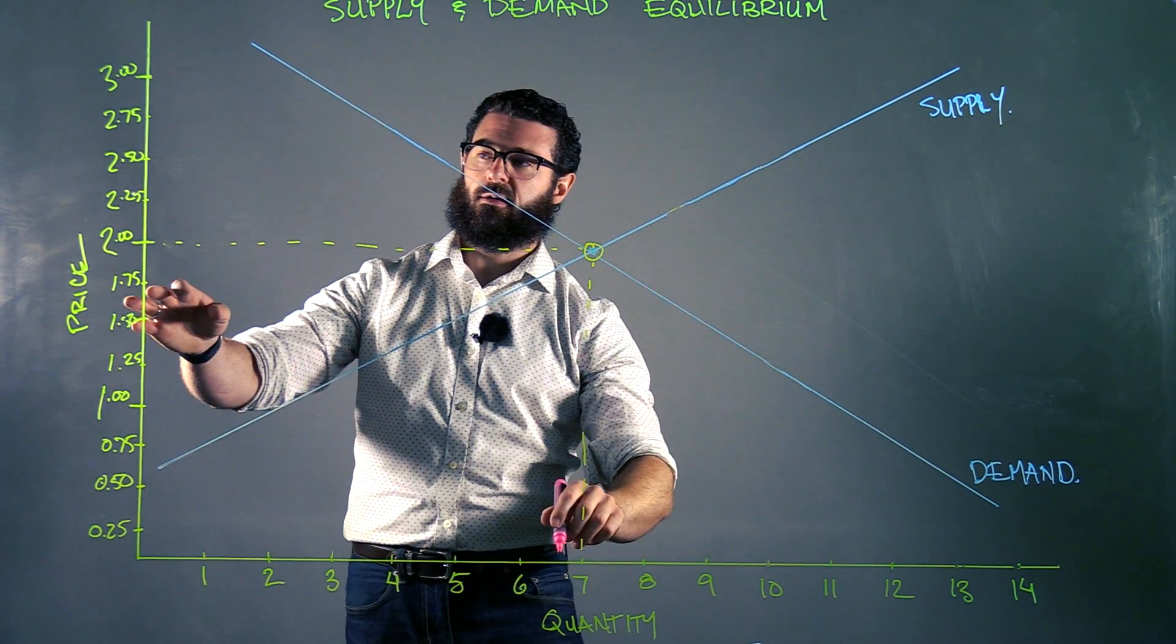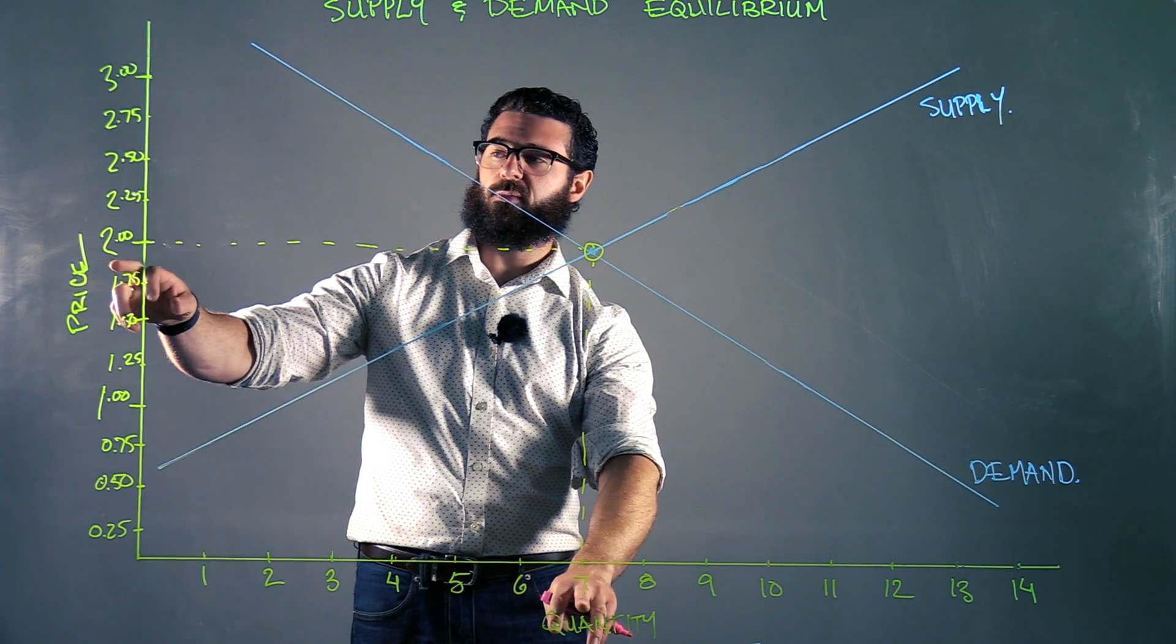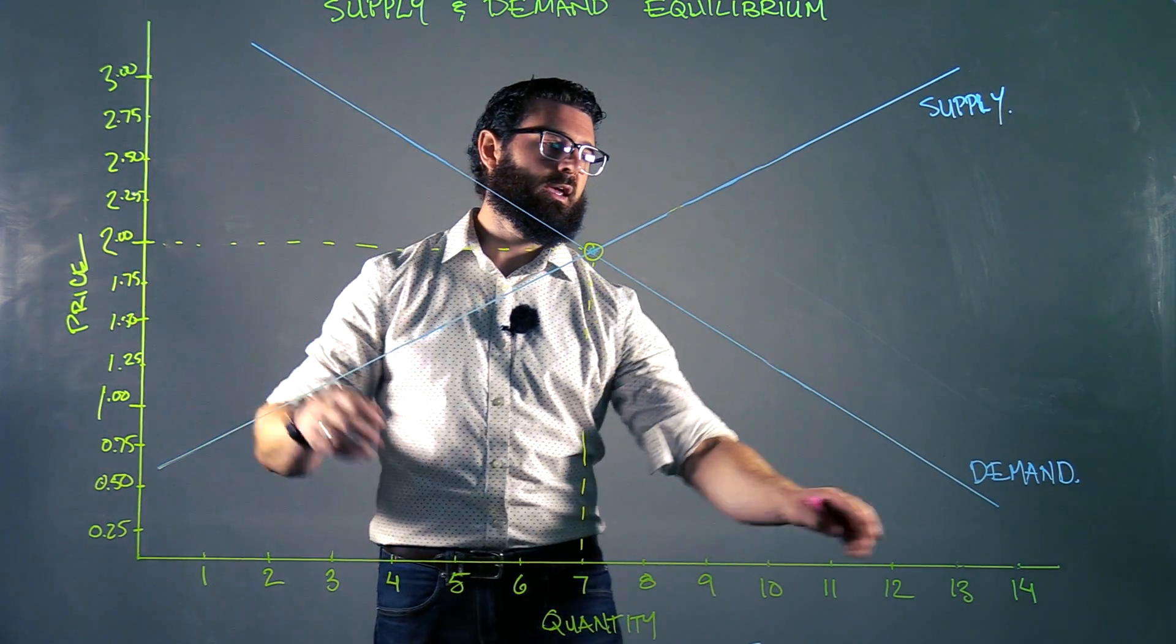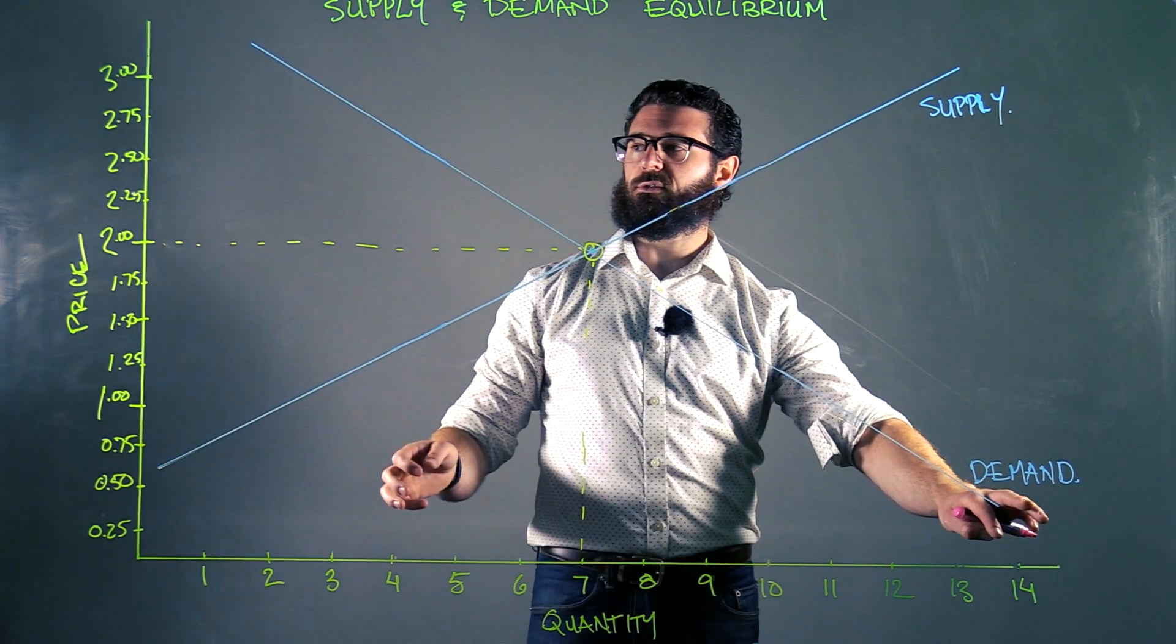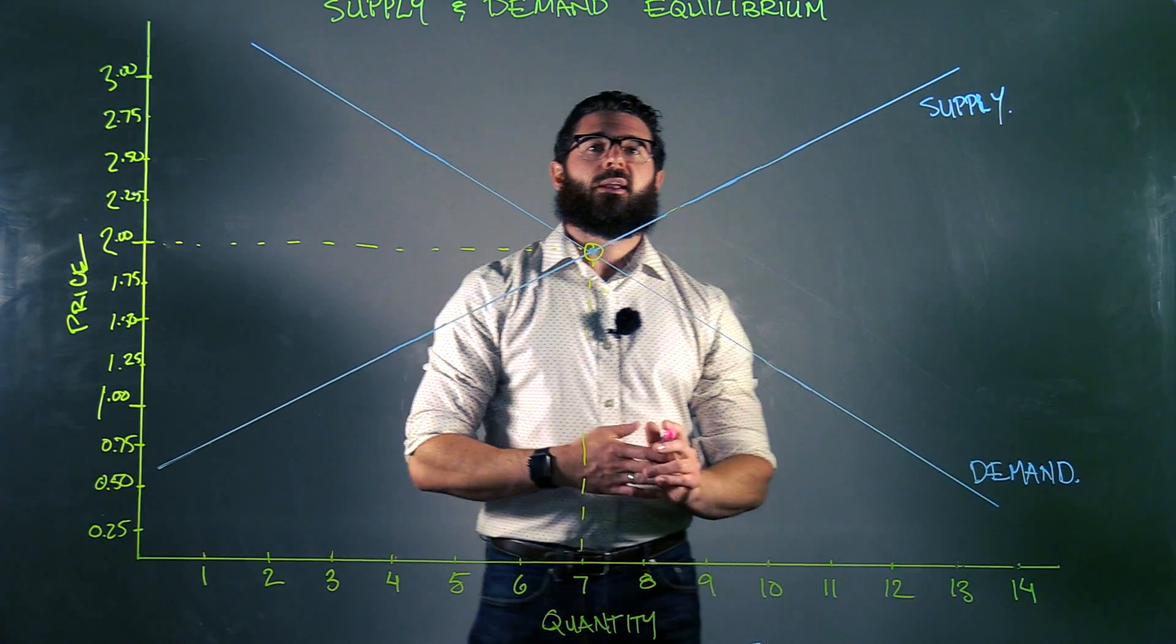So the suppliers are willing to produce seven cones of ice cream when they can sell them at $2, and buyers are willing to demand seven cones when the price is $2.